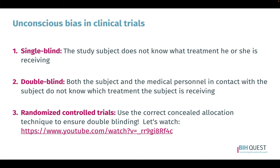Regarding unconscious bias in clinical trials: in single-blinded trials, the study subject does not know what treatment they are receiving. In double-blinded trials, both the subject and the medical personnel in contact do not know. In randomized controlled trials, you need to use a correct concealed allocation technique to ensure double blinding. I encourage everyone to watch a YouTube video that is entertaining and illustrative about what needs to be considered, what can go wrong, and how to do allocation correctly.